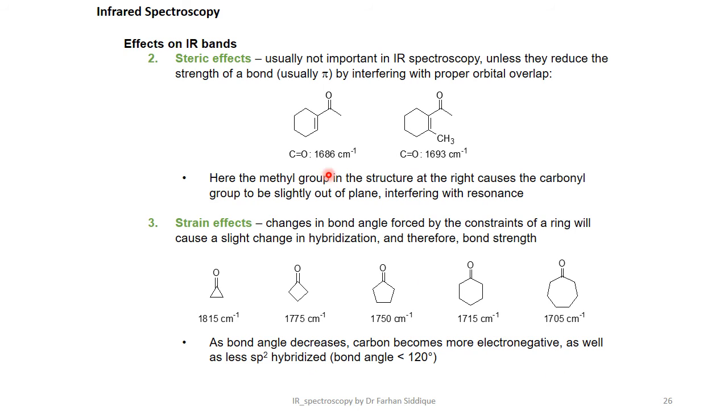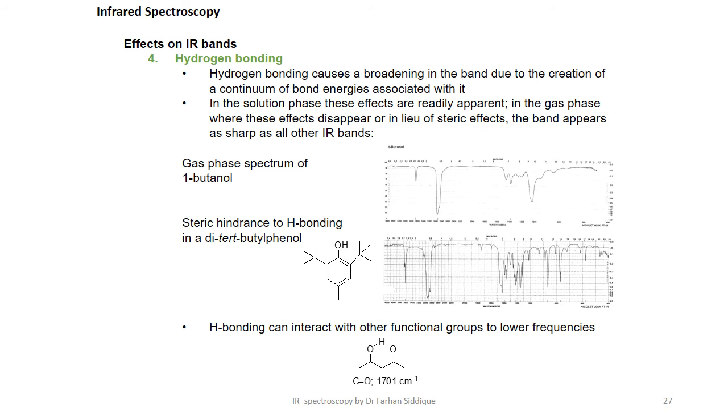Steric effect usually not important in IR spectroscopy unless they reduce the strength of a bond, usually pi by interfering with proper orbital overlap. Strain effect, change in bond angle forced by constraints of strain will cause a slight change in hybridization and therefore bond strength. Hydrogen bonding causes a broadening in the band due to the creation of a quantum of bond energies associated with it.